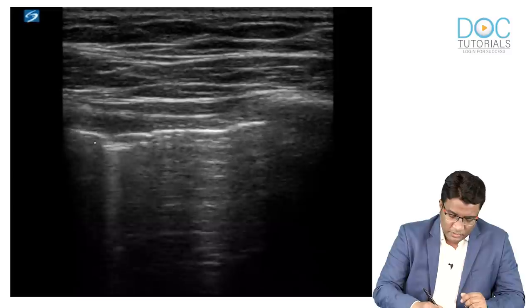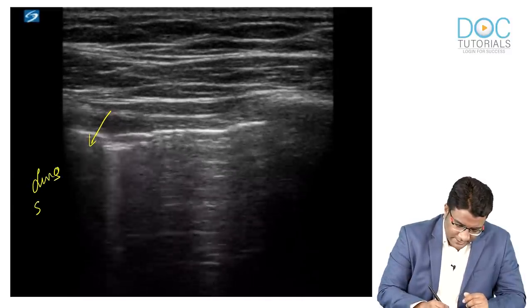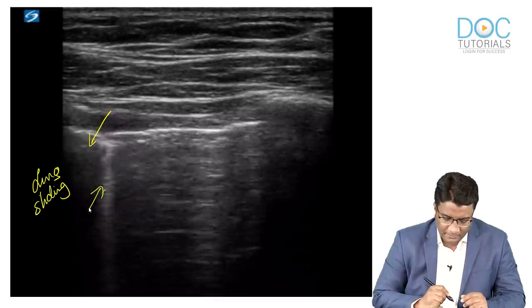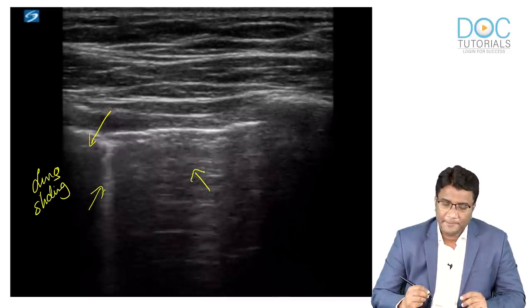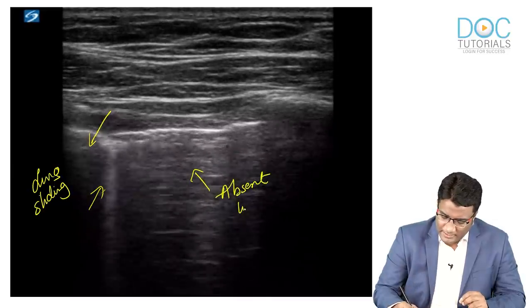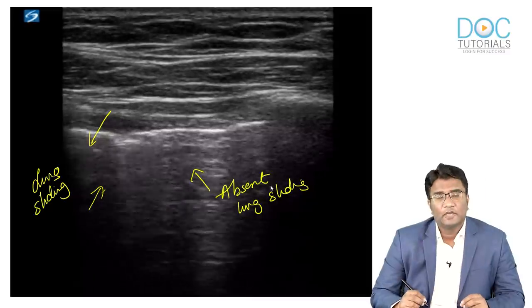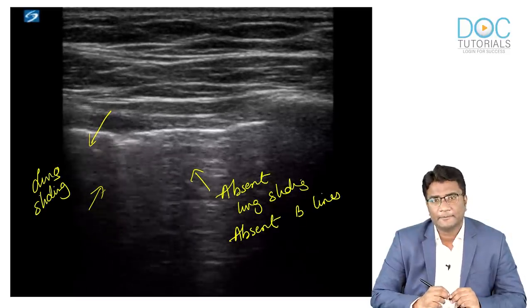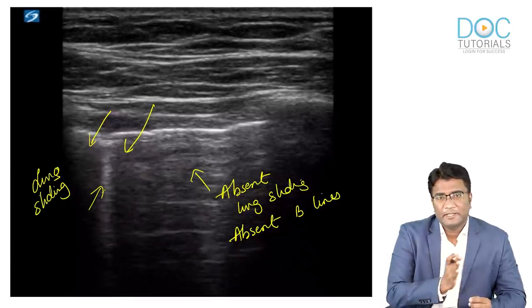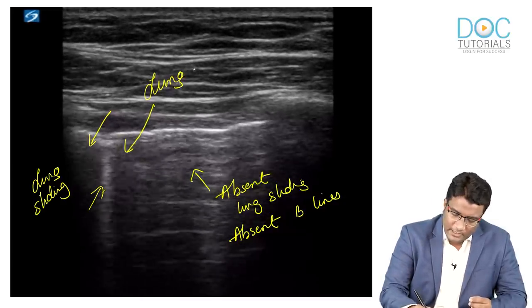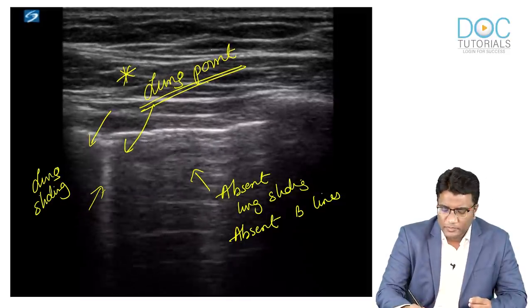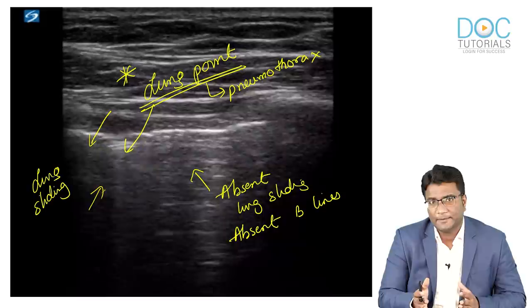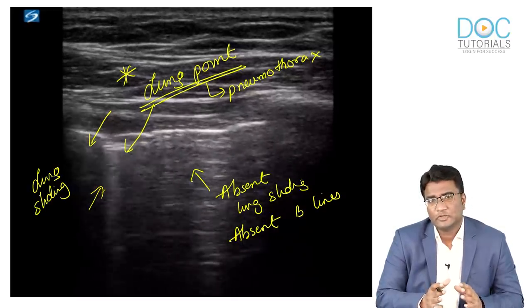Looking at the ultrasound image, you can see the area of lung sliding where the visceral pleura moves across the parietal pleura with vertical comet-tailing (B-lines). In the other part, there is absent lung sliding, absent B-lines, and absent vertical comet-tailing. This point of transition between lung sliding and absent lung sliding is called the lung point, a very specific finding for pneumothorax.